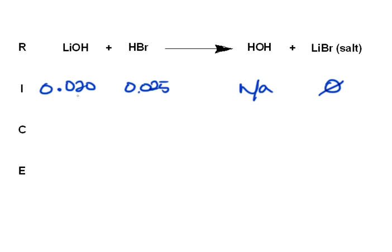Our change is going to depend on our limiting reactant. And since these are one-to-one, the limiting reactant is the one that we have less of, which is lithium hydroxide. So this is going to disappear completely on the reactant side, and the corresponding amount will form on the product side. And so we can fill in our equilibrium amounts.